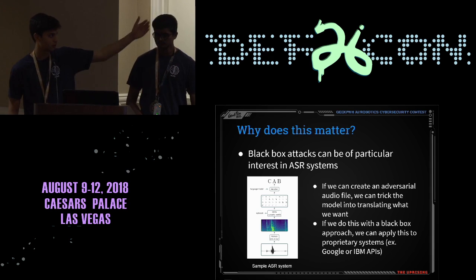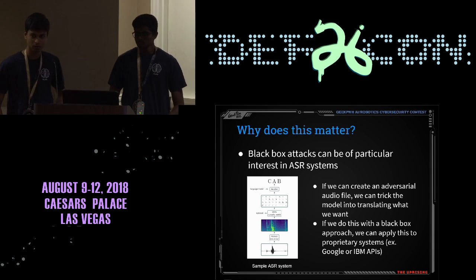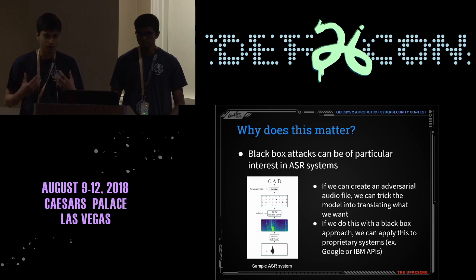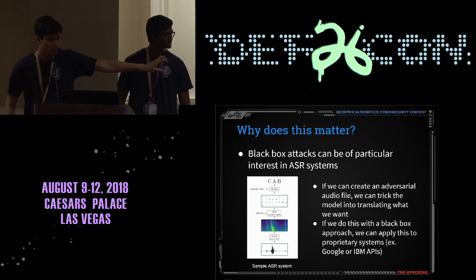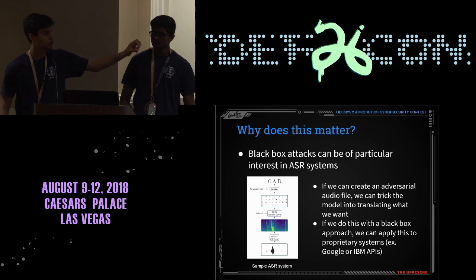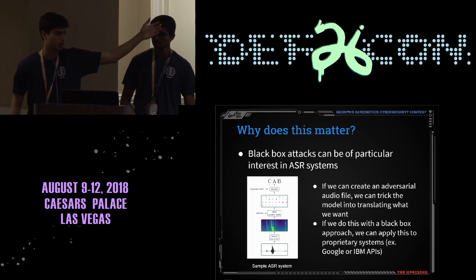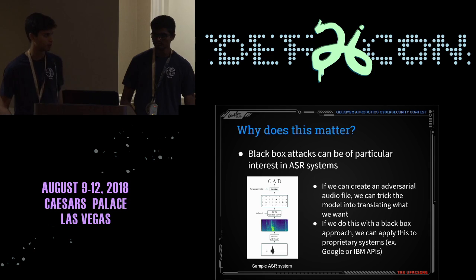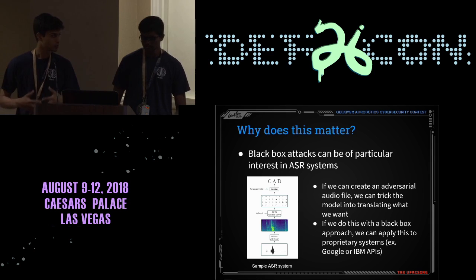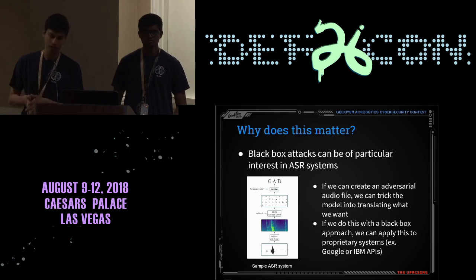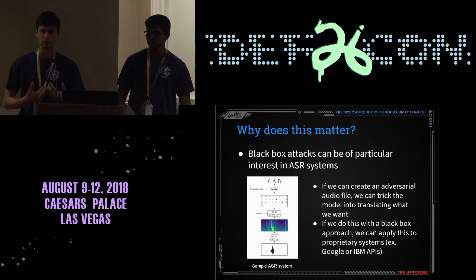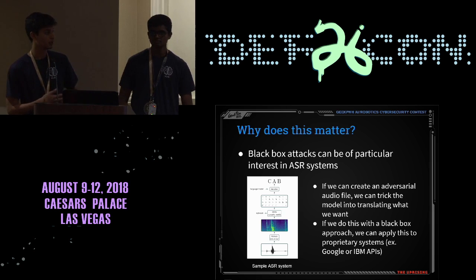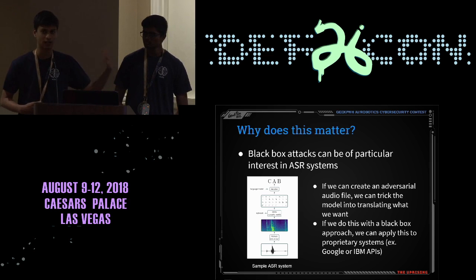This alphabet is finally decoded into the final translated string — this is a typical ASR workflow. If we want to create an adversarial audio file, we want to change the input audio such that we can trick the model into translating what we want at the final decoder step. If we can do this with a black box approach, we can apply this to proprietary systems such as Google or IBM APIs, for which we don't know the model architectures or parameters, and still craft adversarial examples to fool these systems.